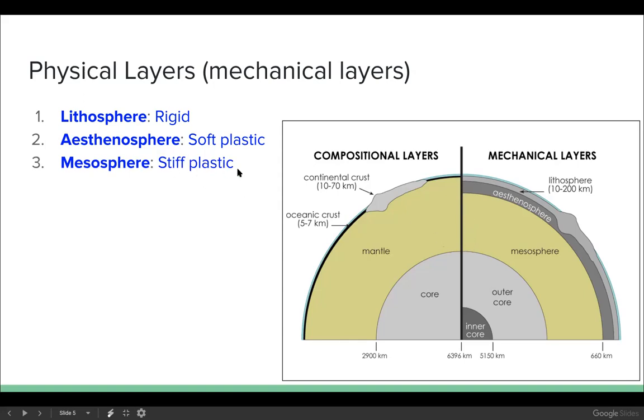The mesosphere, this layer is not quite rigid. It still moves but it's a lot harder to move than the asthenosphere, so we call it stiff plastic.